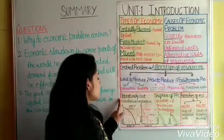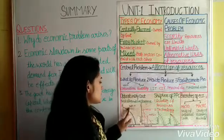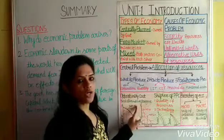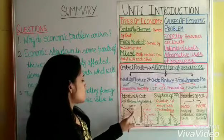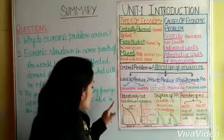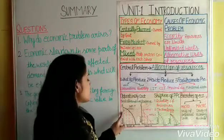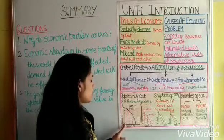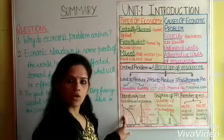Opportunity Cost is the value of the next best alternative forgone. MRT is the ratio between the loss unit and the gain unit. MOC is the value of the next best alternative forgone. The Production Possibility Curve shows the possible combinations of two goods which can be produced by an economy at a given level of technique and efficient utilization of resources.